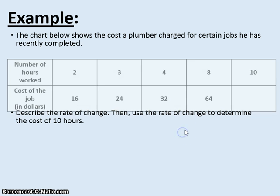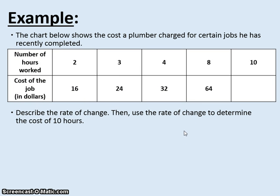Let's look at an example. The chart below shows the cost a plumber charged for certain jobs he has recently completed. So this is how many hours he's worked, this is how much the job cost. Two hours was sixteen dollars, three hours was twenty four dollars, four hours was thirty two dollars, eight hours was sixty four dollars. Describe the rate of change. How much money did he get for each hour? Then use the rate of change to determine the cost for ten hours.